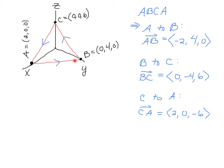So I drew in the arrows for you, and if we're going from A to B to C to A, then first we've got to go from A to B. And the vector from A to B is ⟨-2, 4, 0⟩. So what I'm doing here is I'm subtracting B minus A, so it's tail minus head.